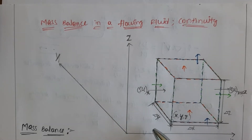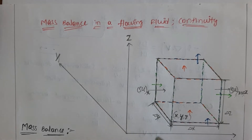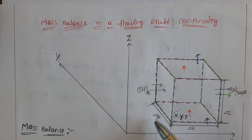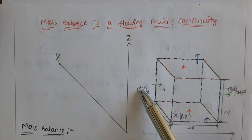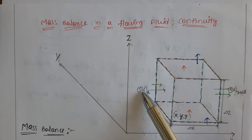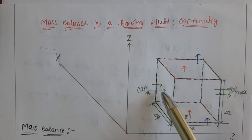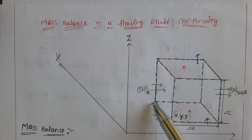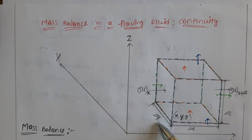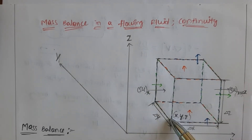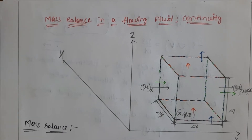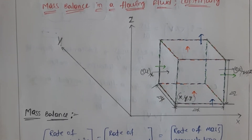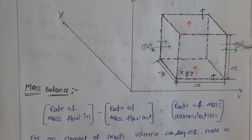The flux is nothing but the flow rate per unit area — whether it is volumetric flow rate, mass flow rate, or molar flow rate, it is any flow rate per unit area. Here we are assuming it is a mass flux, that is mass per unit area. The area for the x face is delta y multiplied by delta z. Now we will see the mass balance for this volume fluid element.